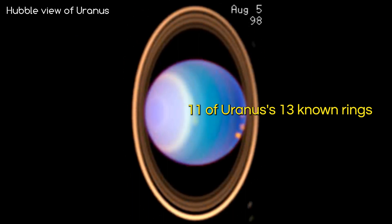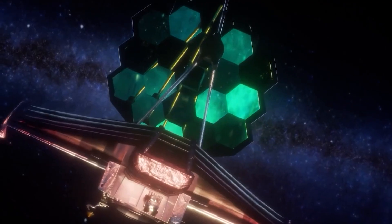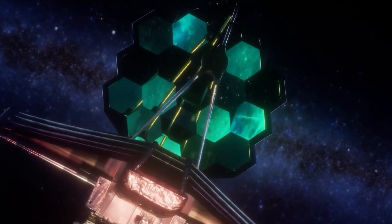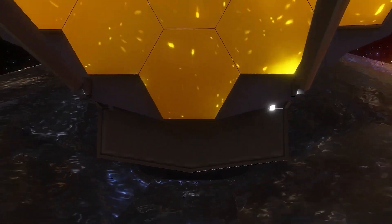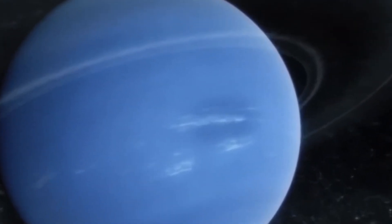The image also reveals 11 of Uranus's 13 known rings, some of which are so bright that they blend together. But what's even more astonishing is that the JWST's near-infrared camera, or NearCam instrument, is sensitive enough to have captured the innermost two of Uranus's dusty rings.